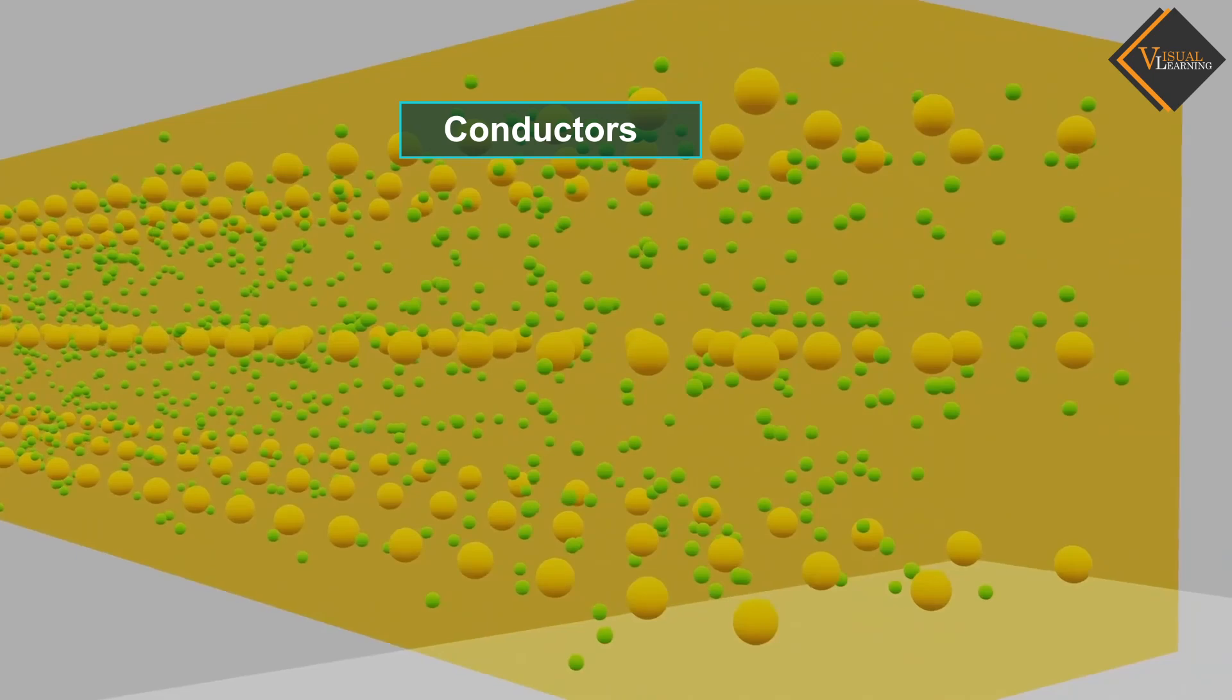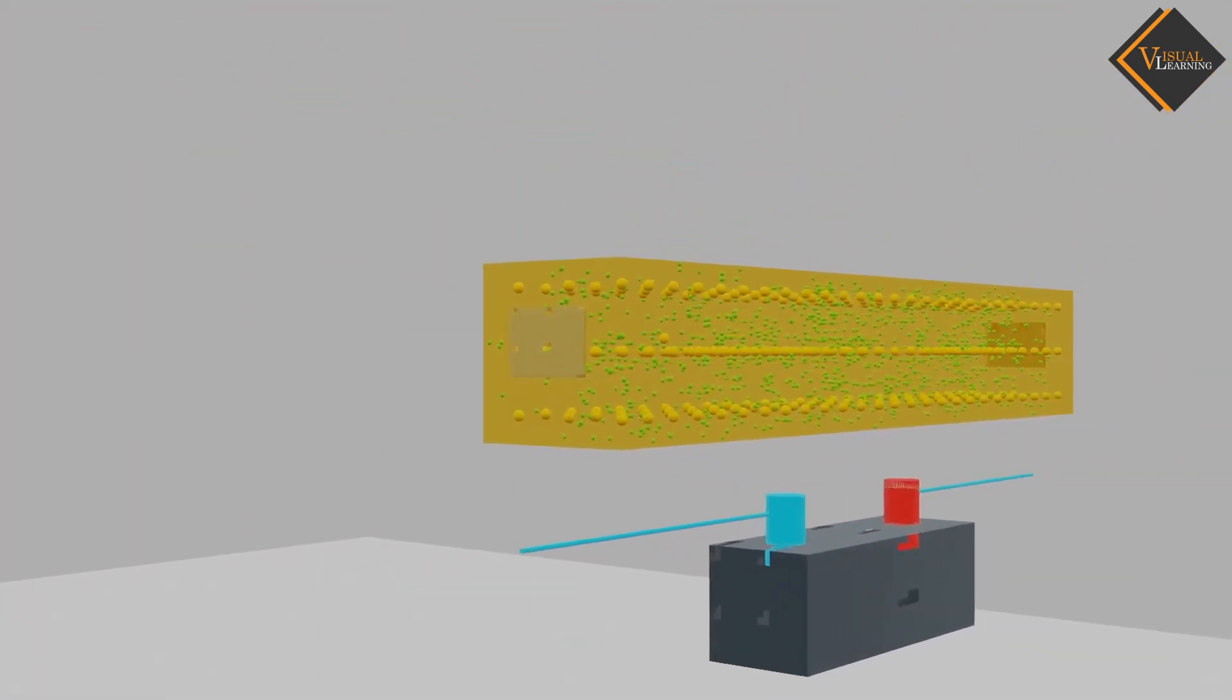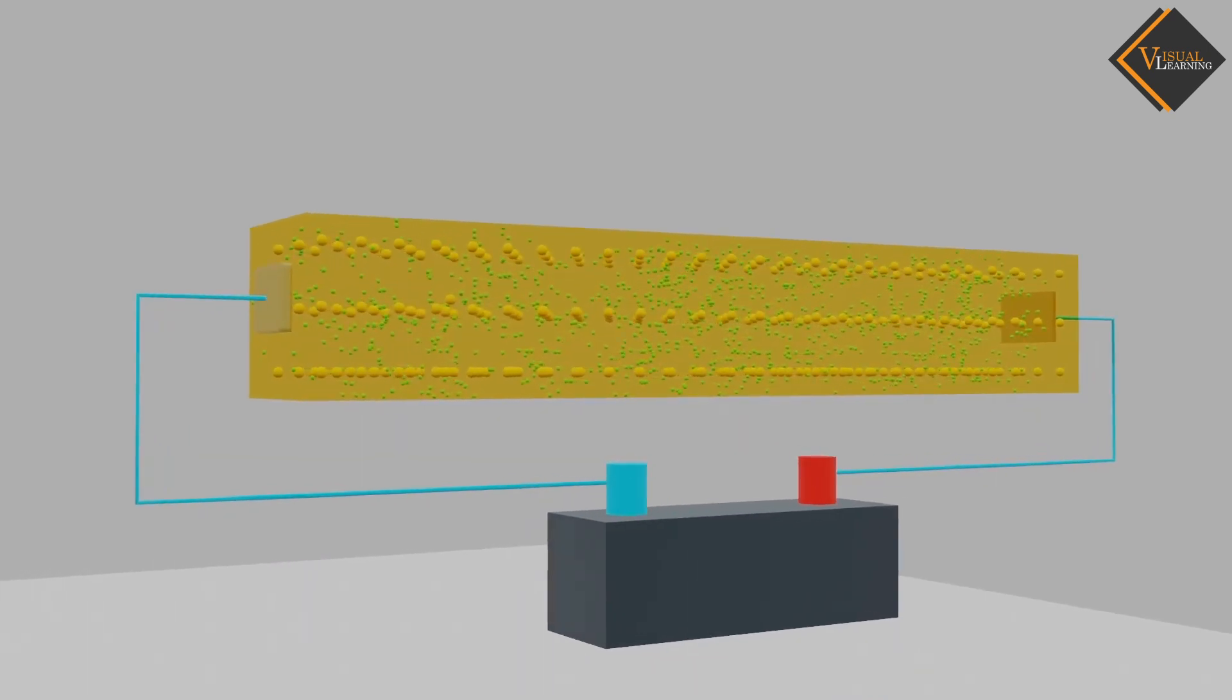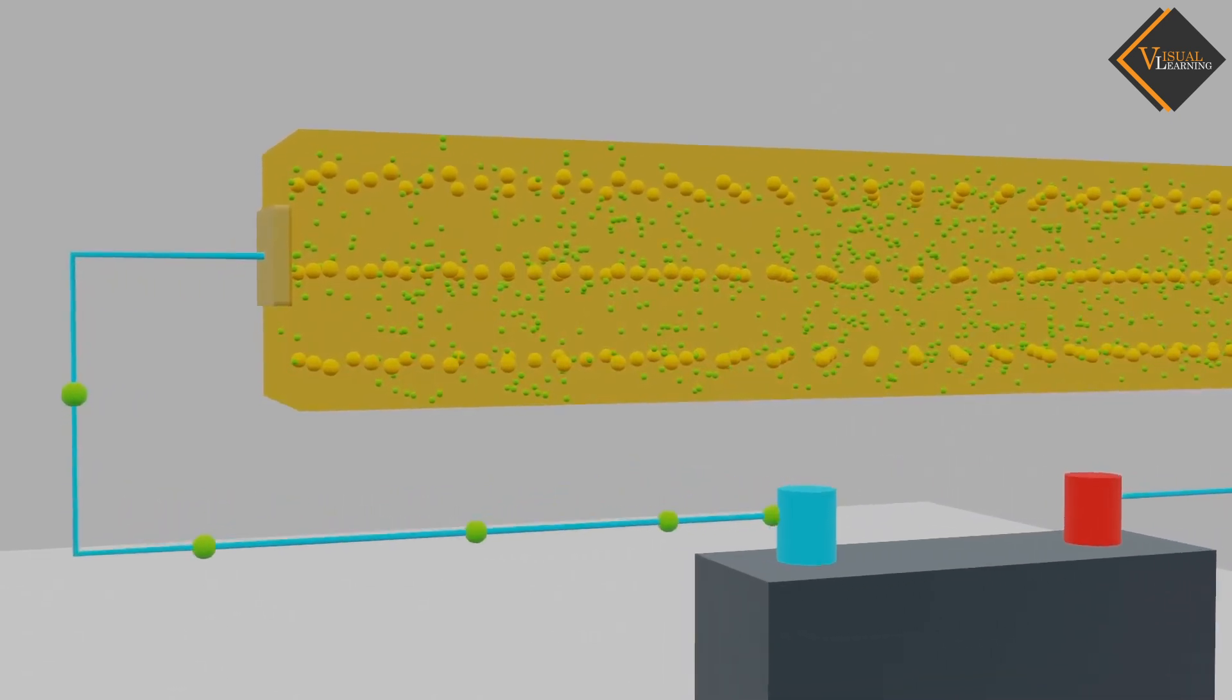If we connect one end of a conductor to the positive terminal of a battery and the other end to the negative terminal, electrons flow from negative to positive. This flow of electrons is called current.